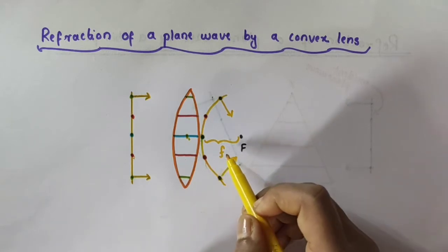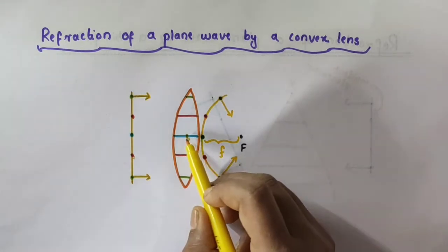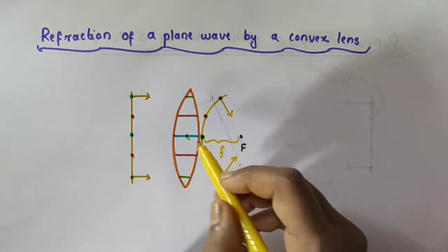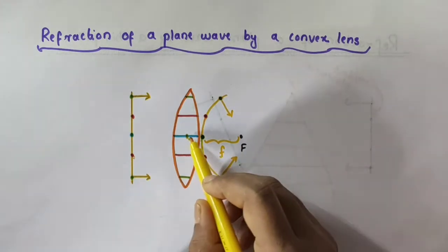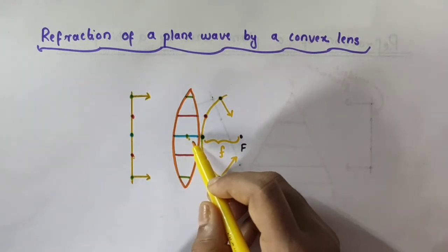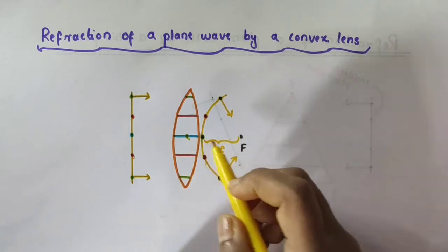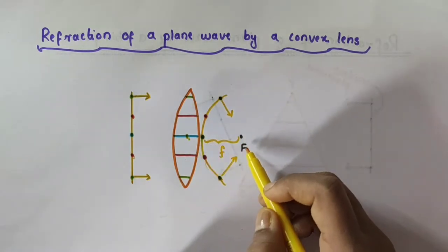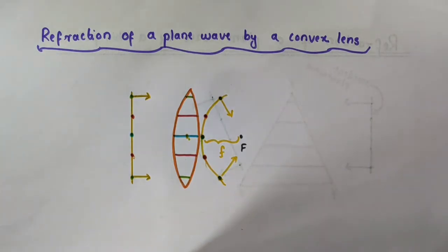The focal length is the distance between the optical center and the principal focus. If the lens is very thin, we can neglect the small distance between the optical center and the point of emergence, so F acts like the center for this spherical wave front.